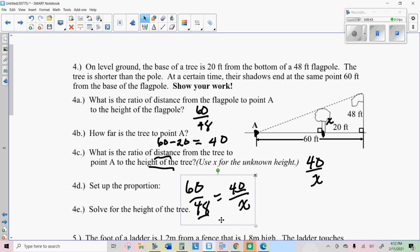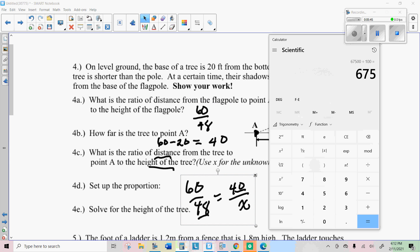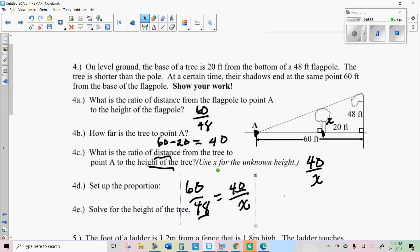Then I'm just going to do forty-eight times forty, divide that by sixty. And that gives me thirty-two. That's the height of the tree. Pretty clever, huh?